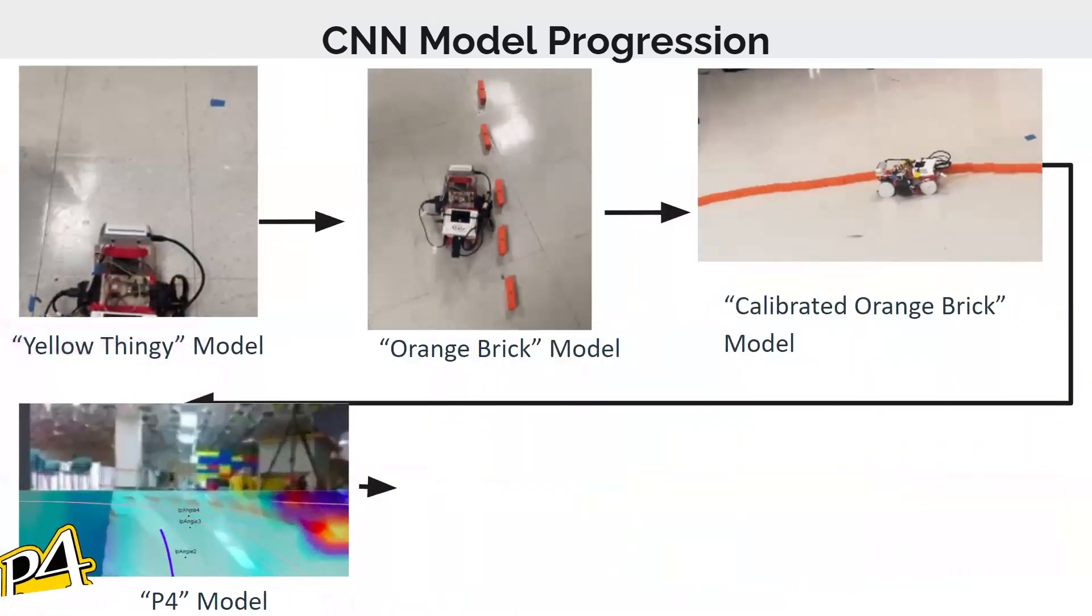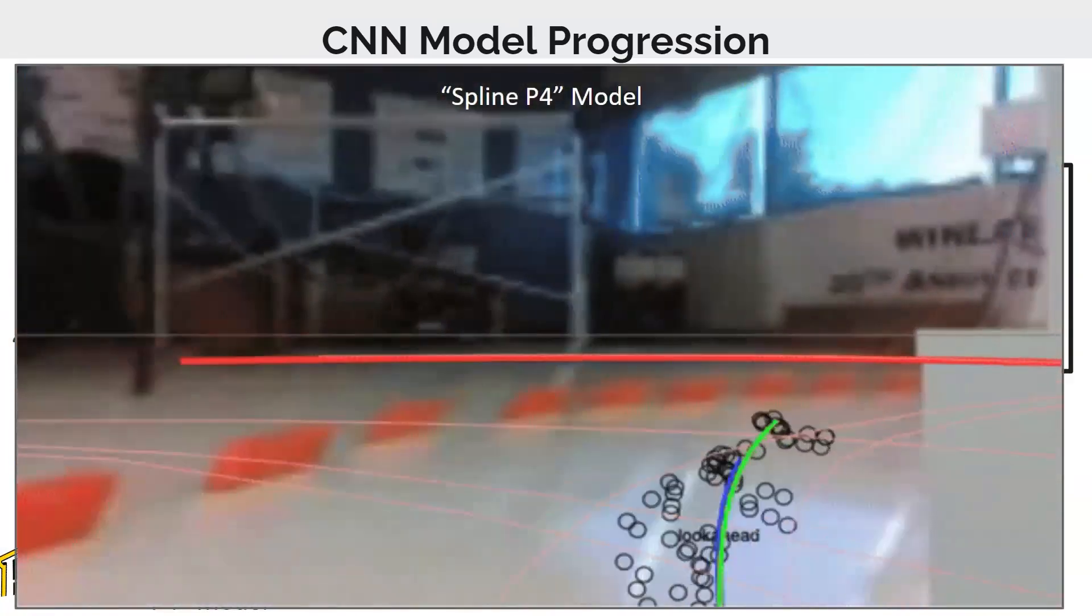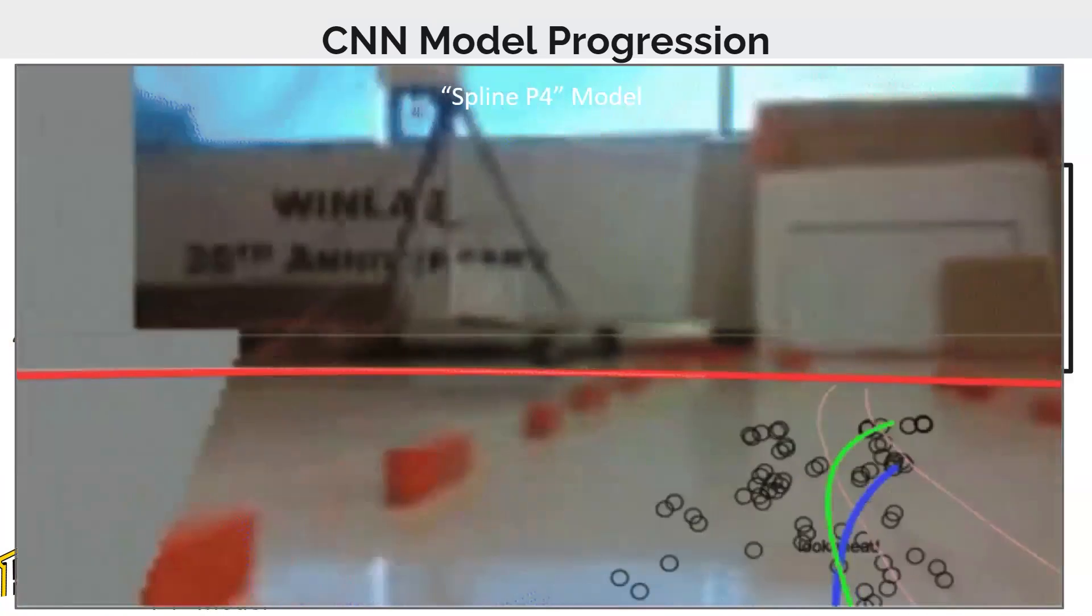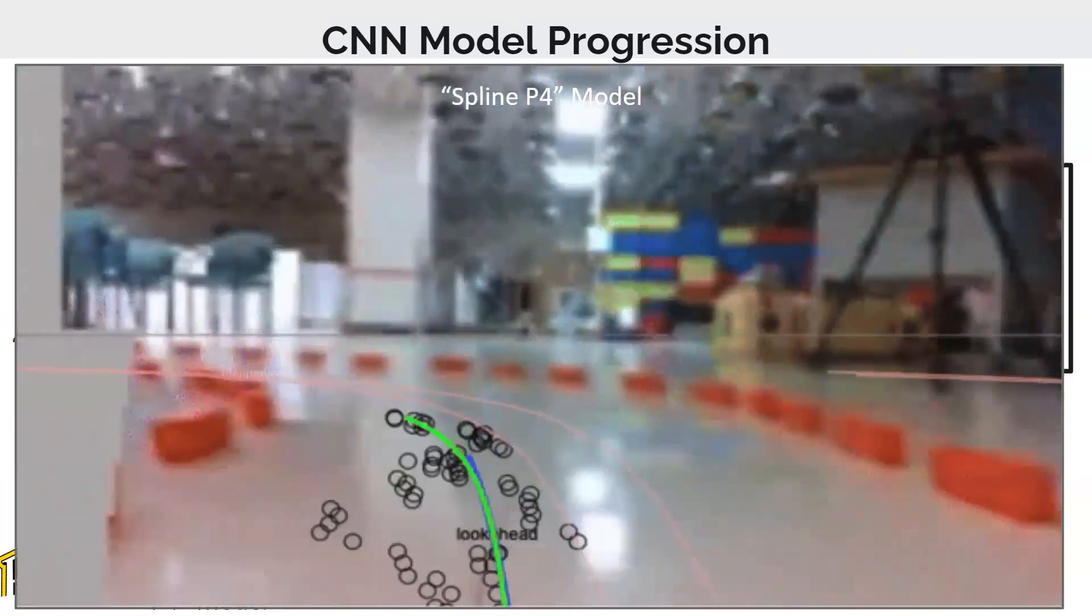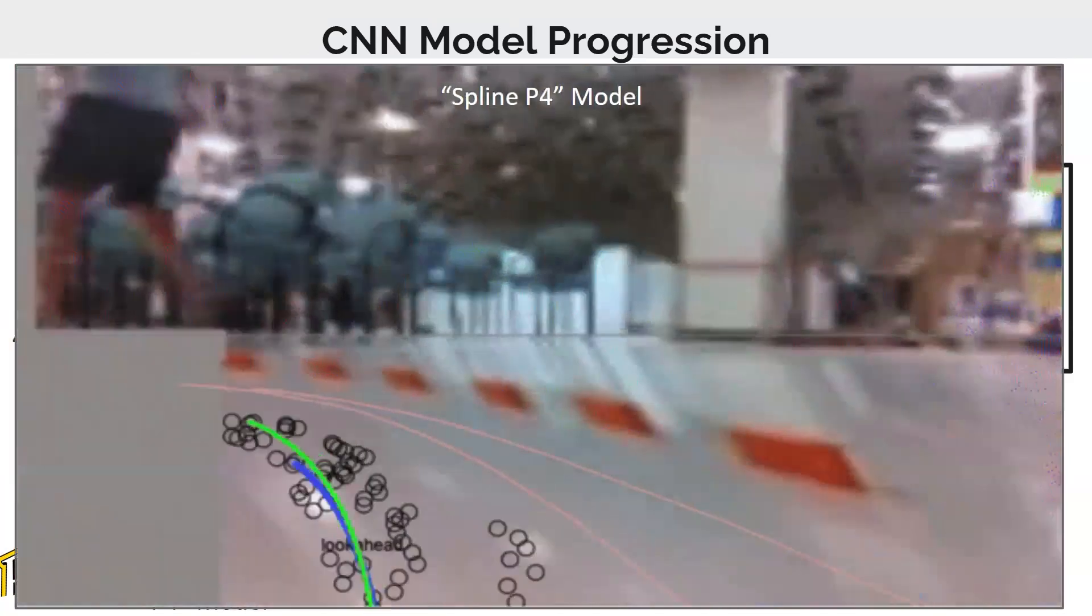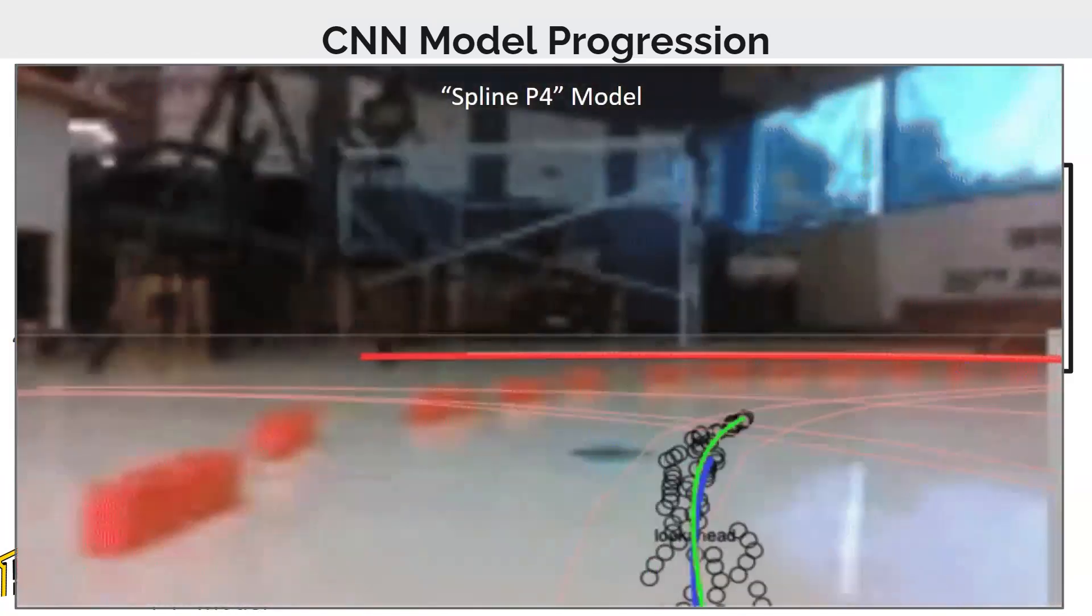And then from there to further improve it, we created a spline from these points. So after the model outputs certain points, we aggregate the previous one as well as the current ones to create a spline, which is sort of like a best fit line for the car to follow.